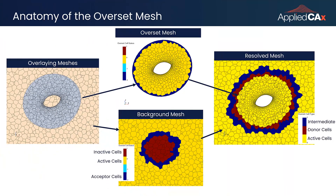Let's look at what the Overset Mesh is doing in a simulation. Going back to our football simulation, we see on the left the two different meshes. The background mesh is in beige and the Overset Mesh of the football is in gray. During the simulation, the Overset Mesh will cut out a section of the background mesh to represent the body — the football in this case — and the air flowing around the body is determined by this Overset Mesh.